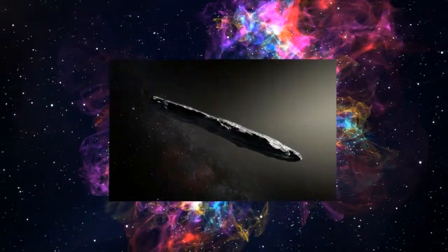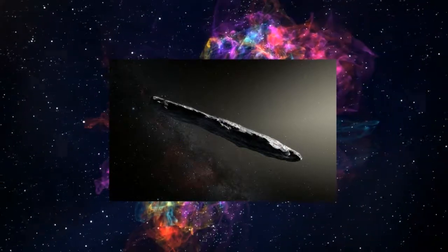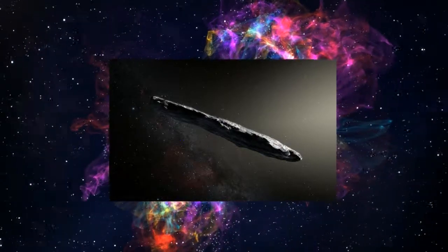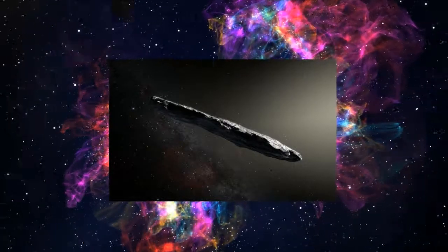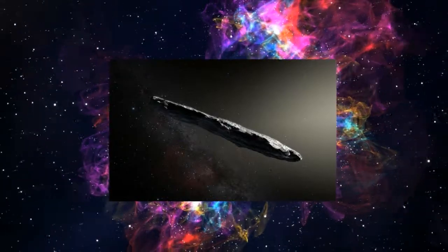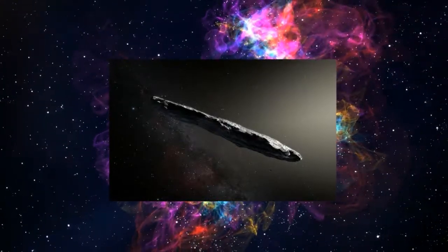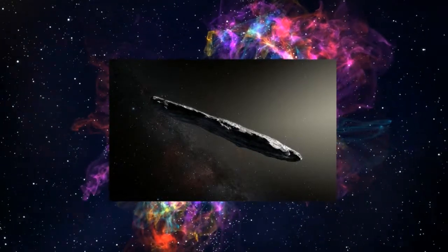For our first story today, Oumuamua is making headlines once again. You may recall that back in 2017, our solar system had its very first interstellar visitor, dubbed Oumuamua by astronomers, meaning scout or distant messenger. Believed initially to be a comet, then an asteroid, then who knows what, this particular comet-asteroid-type thing very quickly demonstrated some very unusual characteristics.